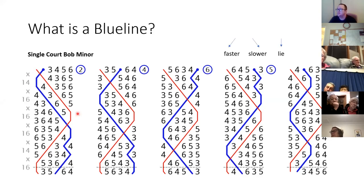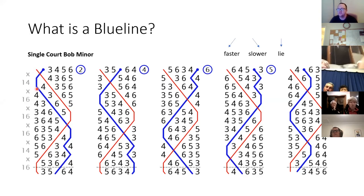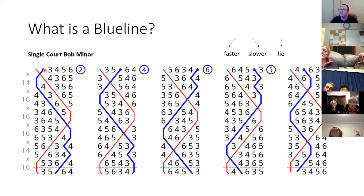Likewise, if the line moves between rows towards the right — such as what the red line does at the start here when it's hunting out — the treble hunting to the back is moving slower. When you're hunting out you're moving slower each change. And there's one last thing: lying — going at round speed — and that's when the line moves straight down. So the direction of the line tells you the speed you have to ring: moving left means ring faster, straight down means ring at round speed, and moving right means ring slower.